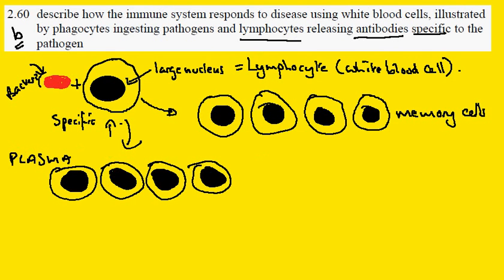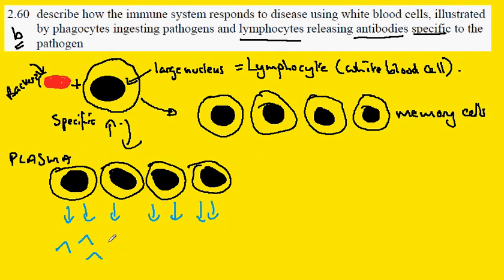What these plasma cells do is they secrete from the cell into the bloodstream protein molecules, which are called antibodies.